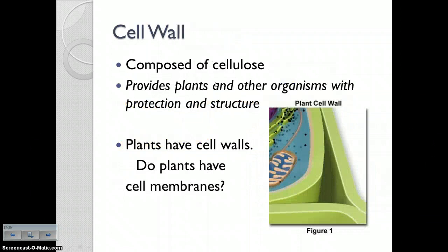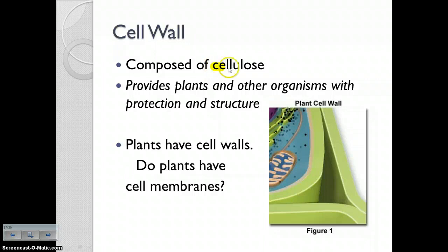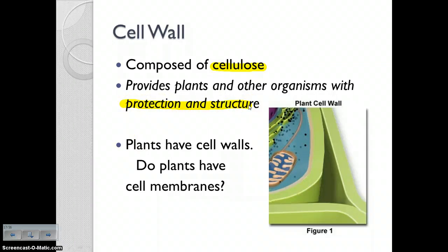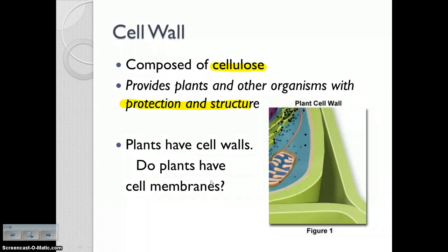The cell wall we've talked a little bit about — mostly in terms of plant cells. In plant cells, the cell wall is made of cellulose. It provides plants and other organisms with protection and structure. Plants also have cell membranes, so plants have cell membranes but the outer layer is the cell wall. Cell walls are found in bacteria and plant cells.